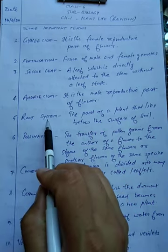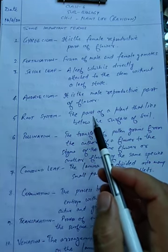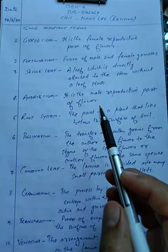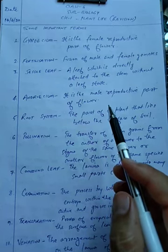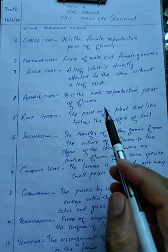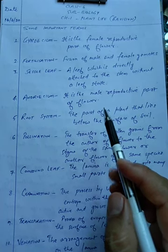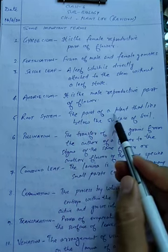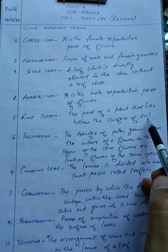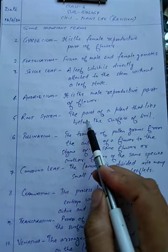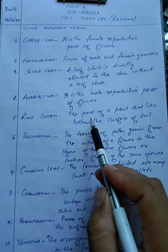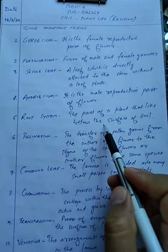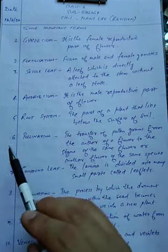Fifth is root system. In the earlier videos you have gone through the root system and shoot system of the plant. The root system is basically the part of the plant that lies below the surface of soil — that part of the plant which remains under the ground. That is called the root system.